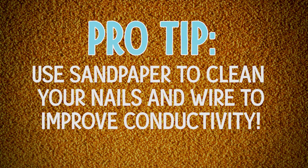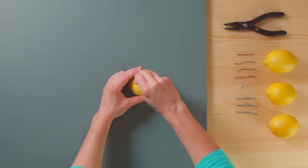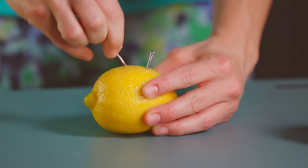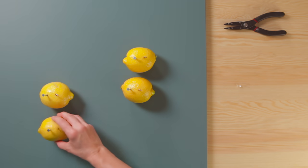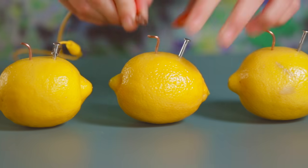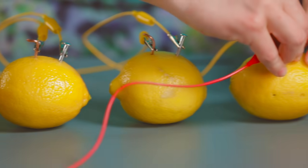So once you've cleaned your copper wire and zinc nails to make sure they're more conductive, you'll stick a nail in one side of the lemon and a wire in the other side. Positive, negative. Do the same with 3 more lemons and set them up in a copper to zinc pattern so you can easily connect the alligator clips.